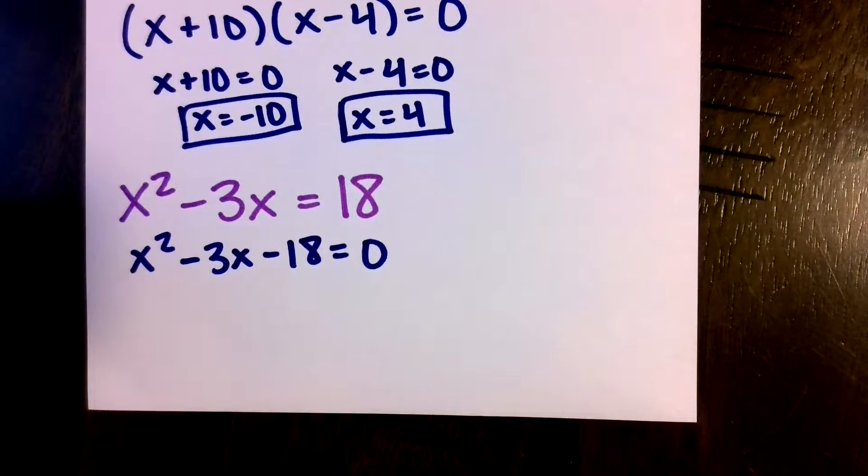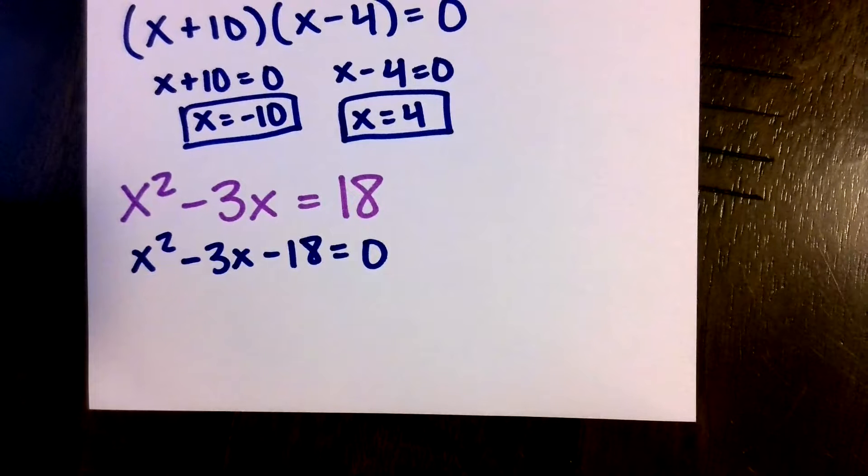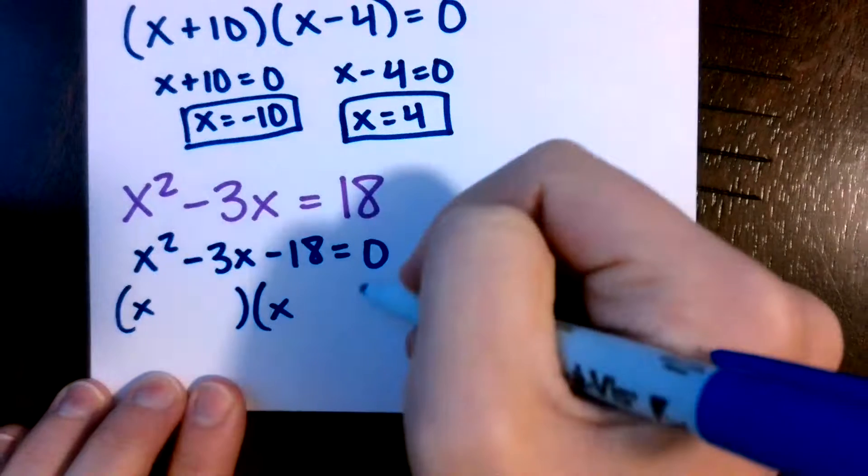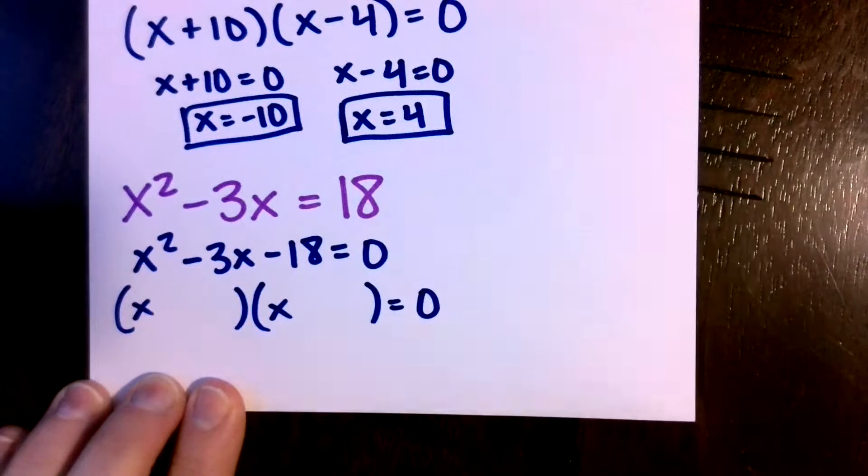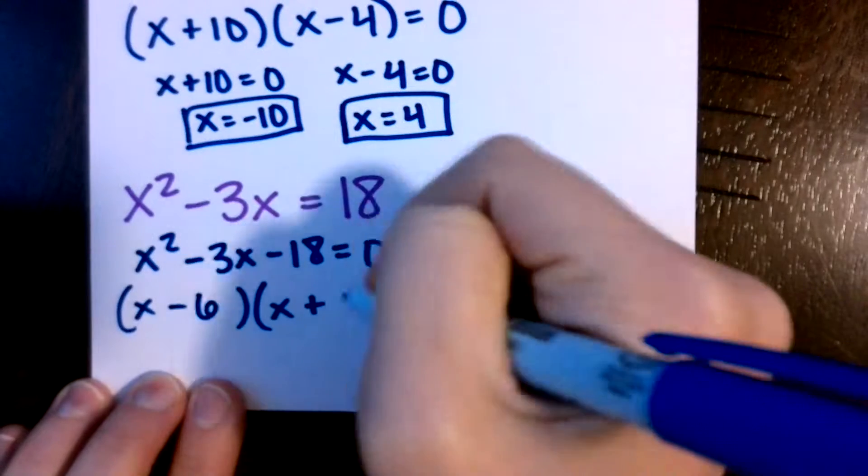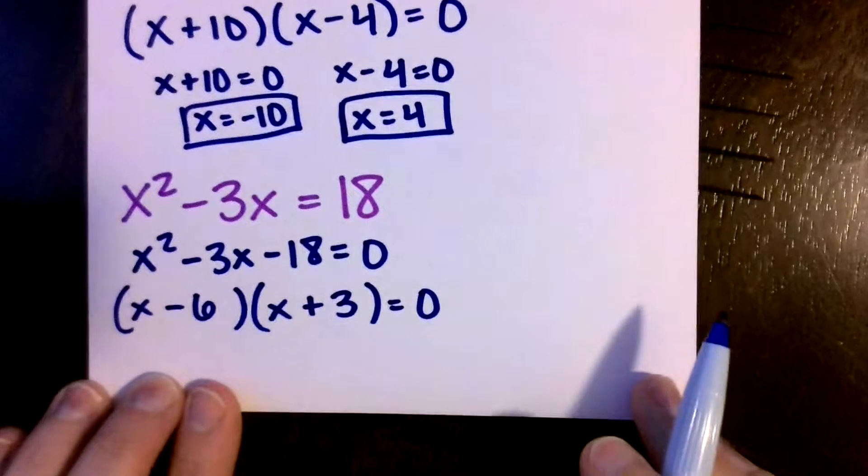Now we're looking for two numbers that multiply to be a negative 18 and add to be a negative 3. So we should have a negative 6 and a positive 3. Multiply to be a negative 18, add to be a negative 3.